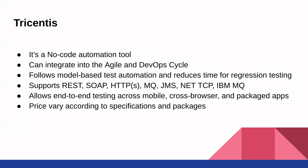The last one in our list is Tricentis. Tricentis is one of the top choices for those who wish to integrate it into the Agile and DevOps cycle. It follows model-based test automation, which facilitates script maintenance and provides fast time for regression testing. One of the primary pros is that it supports multiple protocols such as REST, SOAP, HTTPS, MQ, JMS, NET-TCP, IBM MQ, etc. Another great plus is that Tricentis allows end-to-end testing across mobile, cross-browser and packaged apps. Regarding the pricing, it may vary according to the specifications of each package.